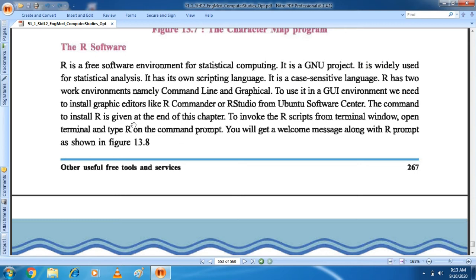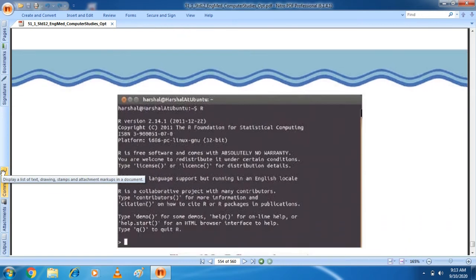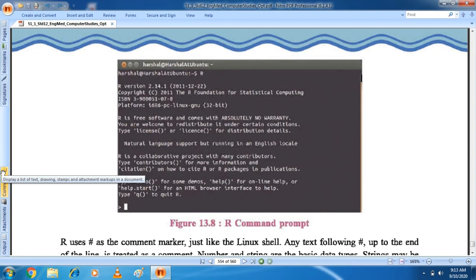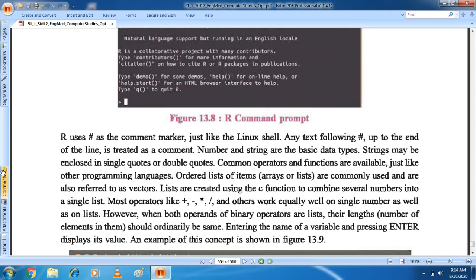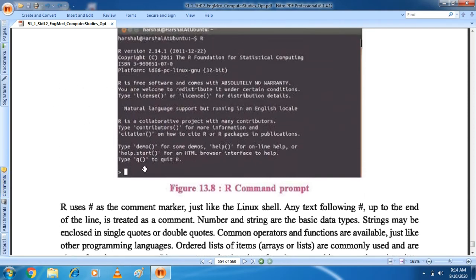The command to install R is given at the end of this chapter. To invoke the R script from terminal window, open terminal and type R on a command prompt. You will get a welcome message along with R prompt as shown in figure 13.8. Students, in last year, you learned about Vim Editor, right? You all know Vim Editor. We used shell script. There were three modes in shell script. Command mode, insert mode, and execution mode. First, you will be in command mode. Then you will open the Vim Editor. You can click insert and use the insert mode. Then you will execute in run time mode. So in that way, student, R software will also have command prompt in which you will write commands and it will work.